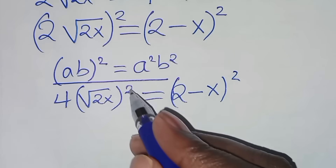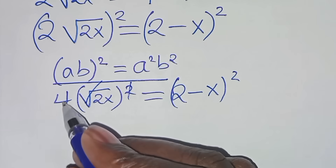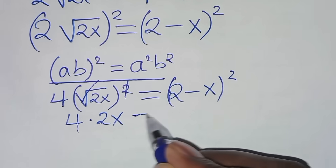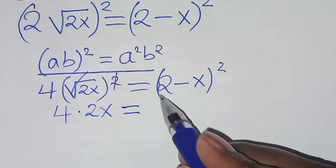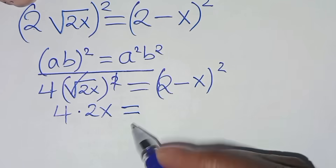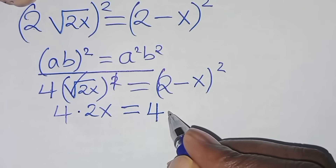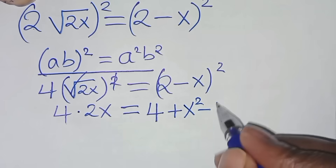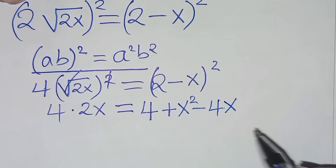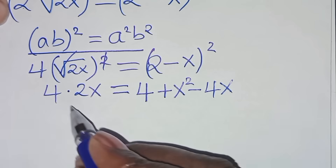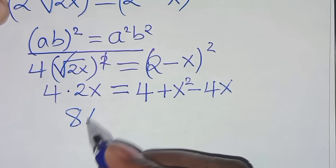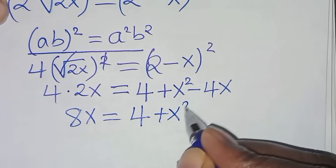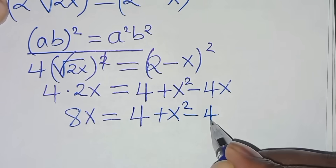So this implies we eliminate the square root sign: 4 times 2x equals 2 minus x raised to power 2. Expanding the right side, 2 minus x squared equals 2 squared which is 4, plus x squared, minus 4x. So on the left we have 4 times 2x which is 8x, and this equals 4 plus x squared minus 4x.